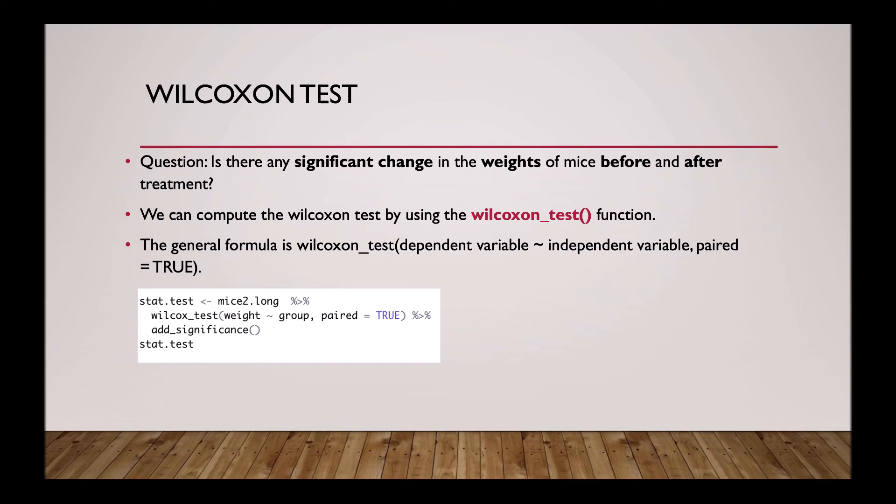The general formula is Wilcoxon test. Then in brackets, the dependent variable, a tilde, the independent variable. And not forgetting to tell R that paired equals true, as this is a within-subjects design.